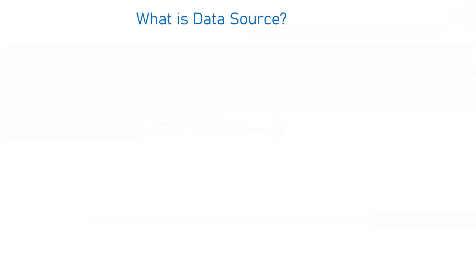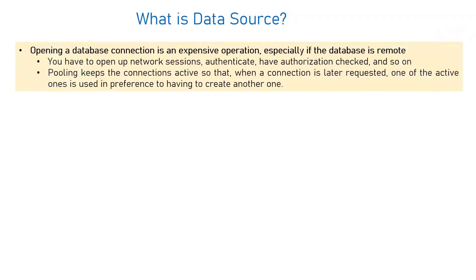So let us first start with what is a data source. I have posted a lot of videos on data source, covering tuning, basic concepts, and different types of data sources. When we talk about your application needing a connection with the database, the application is deployed on your WebLogic server and you have a backend database, which may be running on the same machine or a different machine — especially in production environments with high availability architecture. Every time your application needs a connection from the database, it has to reach out to the database.